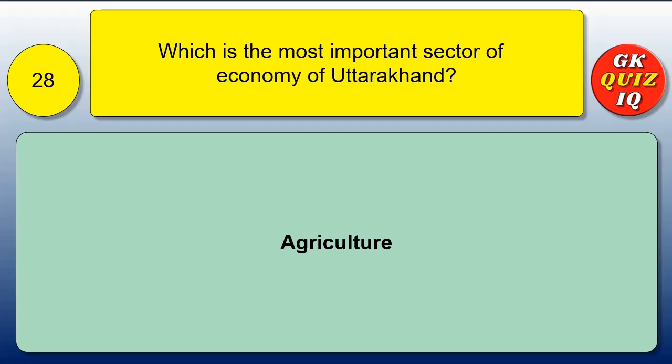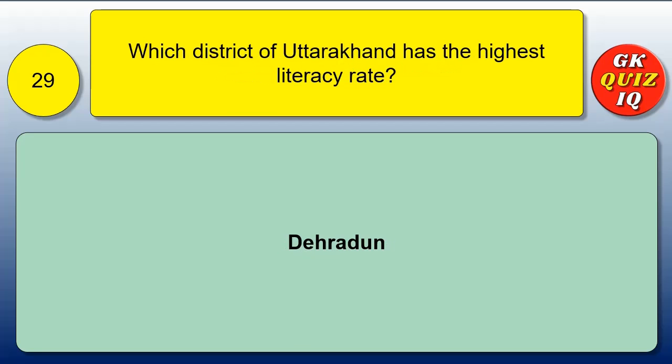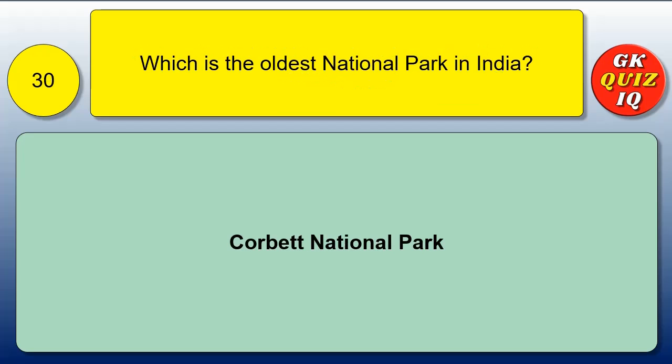Which is the most important sector of the economy of Uttarakhand? Which district of Uttarakhand has the highest literacy rate? Dehradun. Which is the oldest national park in India? Corbett National Park.